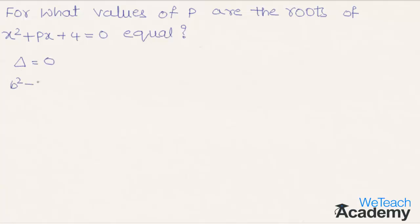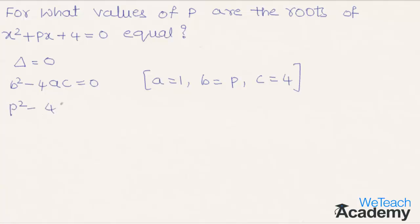So delta, which is b squared minus 4ac, is equal to 0. Comparing the equation with ax squared plus bx plus c equal to 0, we get a equal to 1, b equal to p, and c equal to 4. Substituting, we get p squared minus 4 into 1 into 4, which gives p squared minus 16 equal to 0.